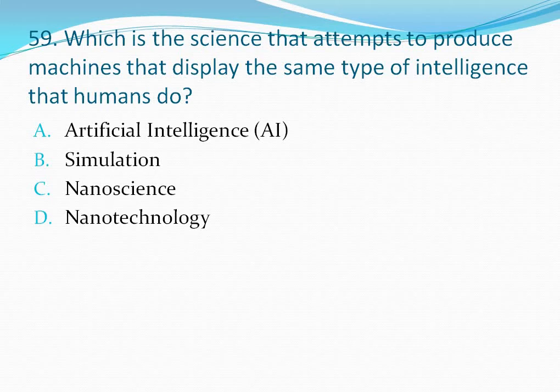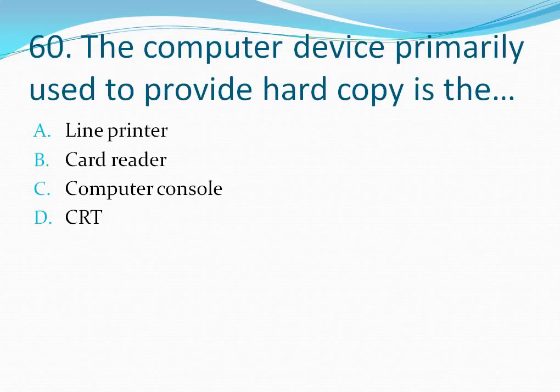Question number 59: Which is the science that attempts to produce machines that display the same type of intelligence that humans do? Your options are: option A artificial intelligence, option B simulation, option C nano science, option D nanotechnology. The correct answer is option A — artificial intelligence.